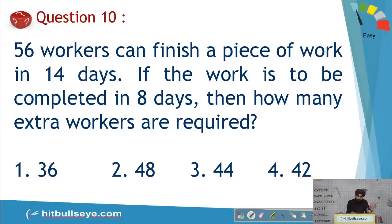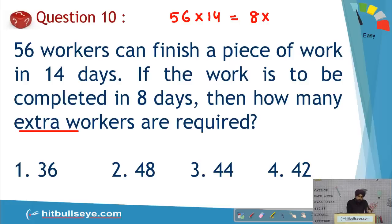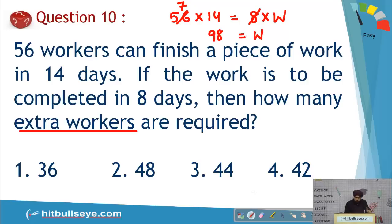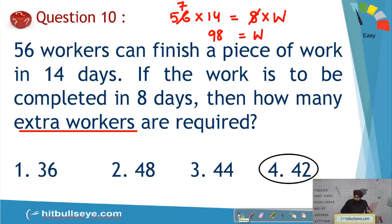Time and work question: 56 workers completed a piece of work in 14 days. Total work = 56 × 14 = 784 man-days. To complete it in 8 days, workers needed = 784/8 = 98. Extra workers required = 98 − 56 = 42.